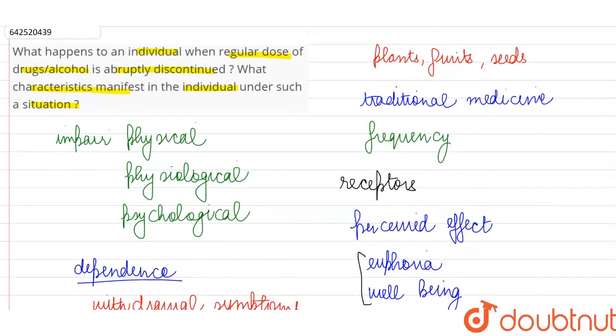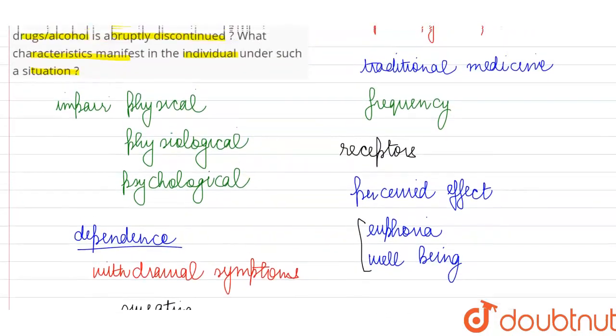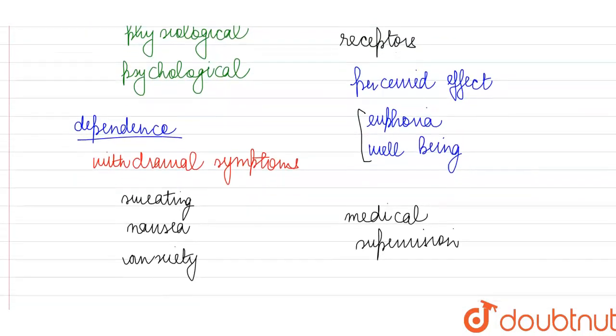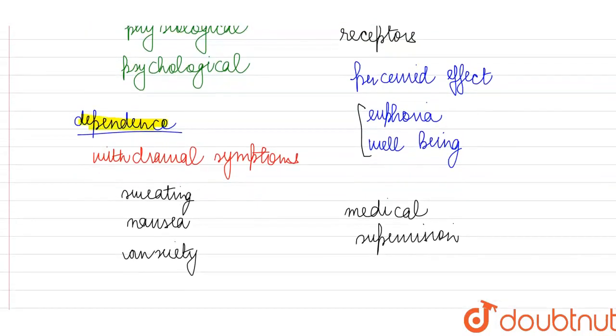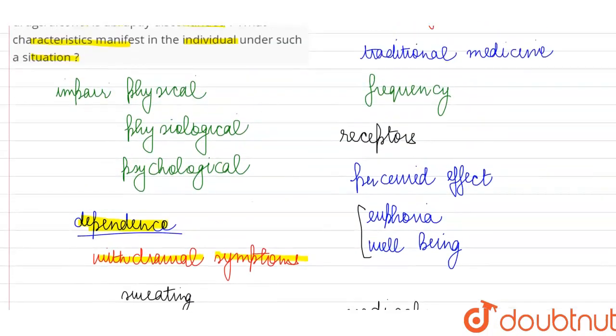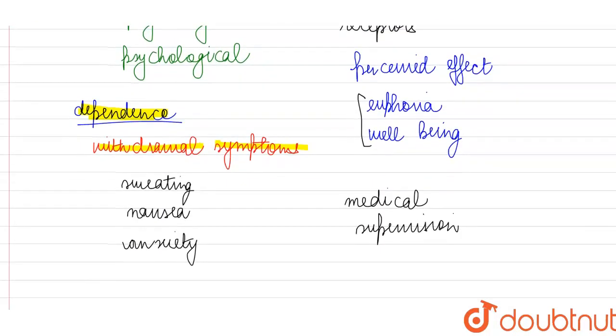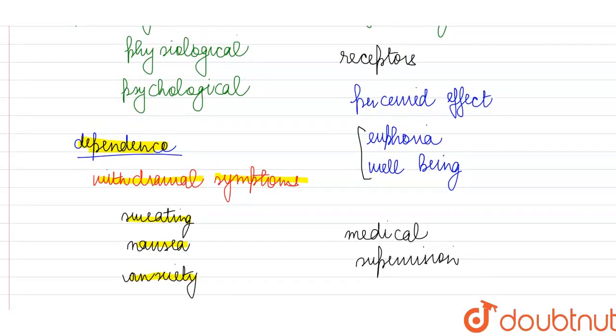In the question they were asking, what happens to an individual if a regular dose is abruptly discontinued? If the person is not addicted, if a person is not attached to a particular drug, then they are not going to face much problems. But if the person has reached a stage of dependence, then they are going to experience some really unpleasant withdrawal symptoms. This is what they are asking in the question, what characteristics manifest? The withdrawal symptoms are generally sweating, nausea, anxiety and shakiness. And in some cases, they might be so severe that the person might even need medical supervision.